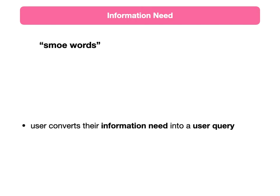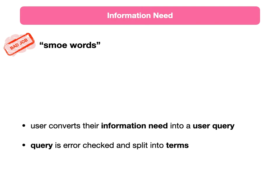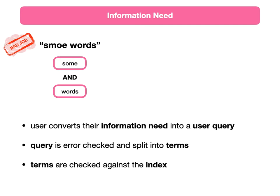Now let's talk about the information need. The user will convert their information need into some kind of query — just like I did with 'beehive sadness.' Hopefully your system is robust enough to take even the crummiest, stupidest query and get the user close to what they want to see. So you might take a misspelled word — another bad job by the brain. But we have systems for error checking: you could say that first word is actually closest to 'sum,' so we'll substitute 'sum.' Then we split the query into terms: 'sum' and 'words.'